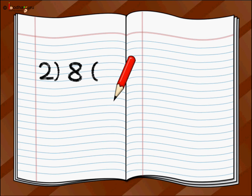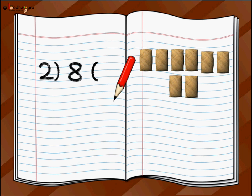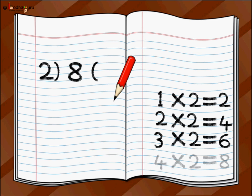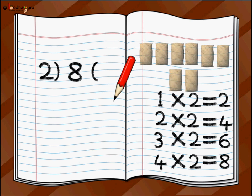First we give one bag to every son of the farmer — one and two. So we make a group of two bags. Let us see how many groups of two bags we can make. We use the multiplication table of two: one two's are two, two two's are four, three two's are six, and four two's are eight. Stop here because we have only eight bags. Four groups of two's make eight. So we write four after the right bracket as the result.